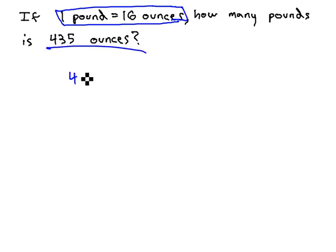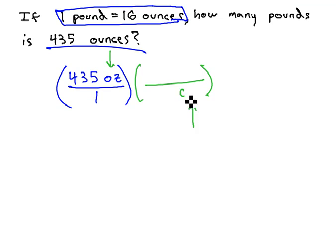First, we need to make those 435 ounces that we start with, and make them into a fraction by putting them over 1. We then can start setting up our conversion factor, where we want to get rid of the ounces, which are currently in the numerator, by moving them to the denominator.